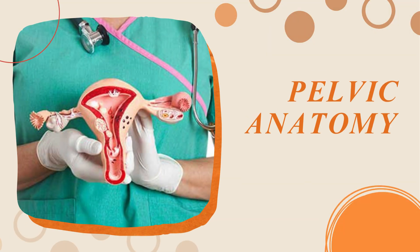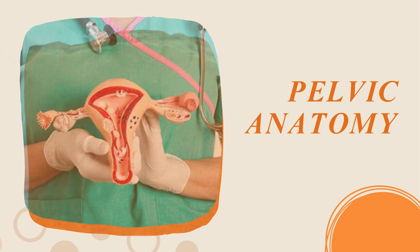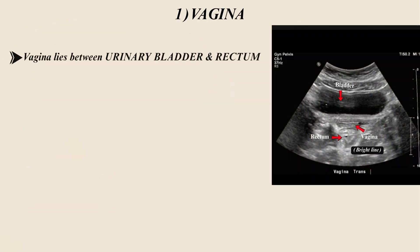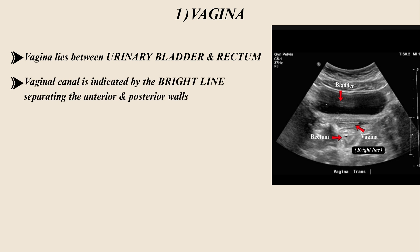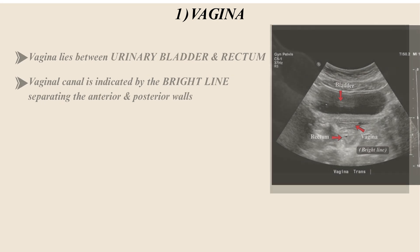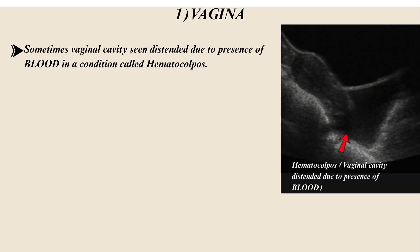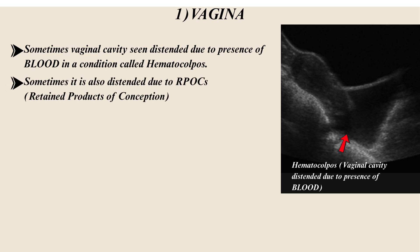Let's start our discussion about pelvic anatomy now. The vagina lies between the urinary bladder and rectum. The vaginal canal is indicated by the bright line separating the anterior and posterior walls. Sometimes the vaginal cavity is distended due to the presence of blood in a condition called hematocolpos, and sometimes it is distended due to the presence of RPOCs.